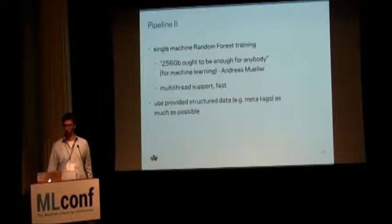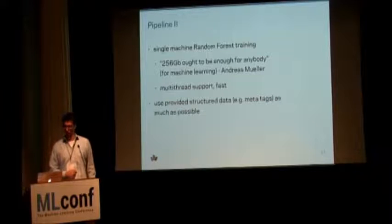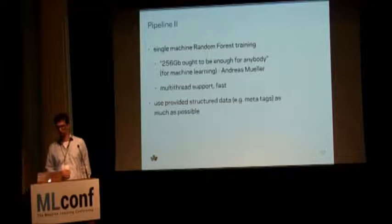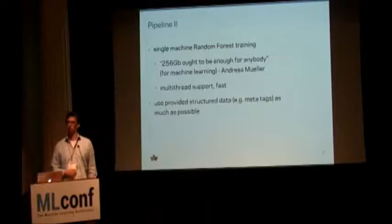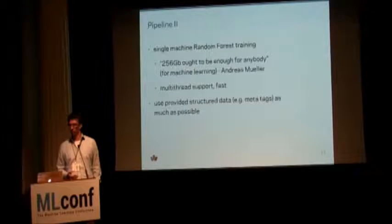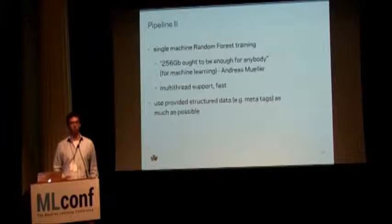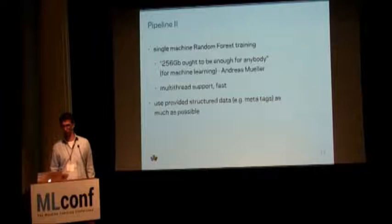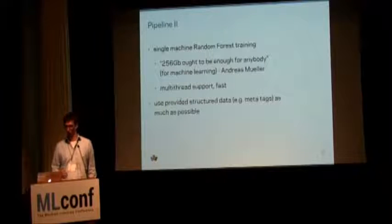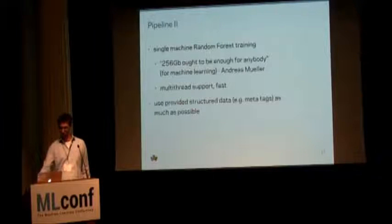Coming back to the pipeline, the last part near the machine learning step is that we use single-machine random forests. Andreas Müller, the release manager of scikit-learn, said in a talk recently that 256 gigabytes ought to be enough for anybody for machine learning — motivated by the fact that this is roughly the largest EC2 instance you can get, and it's still a lot cheaper than a data scientist. The generalization is that whatever the largest EC2 instance is at any given point, that memory should be enough for most startup use cases, and it gives us a lot of freedom.